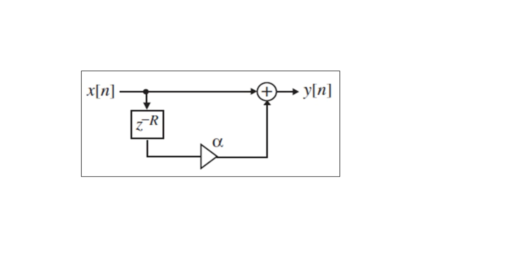First of all, the sound from each individual instrument is recorded in an acoustically inert studio where there is no noise, and that will be on a single track. Afterwards, the signals from each of the tracks are manipulated by the sound engineer for adding spatial effects to the audio track, and they are further combined into a mix-down system for finally generating the stereo recording on a two-track instrument.